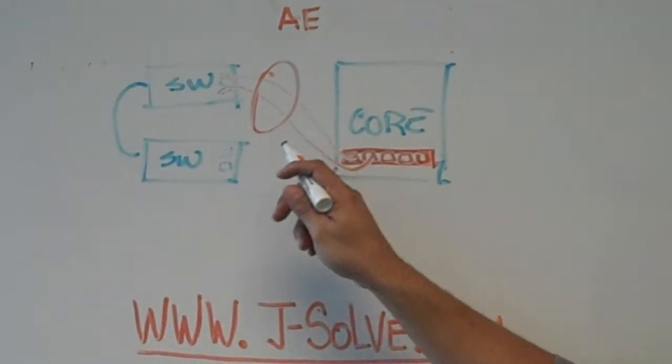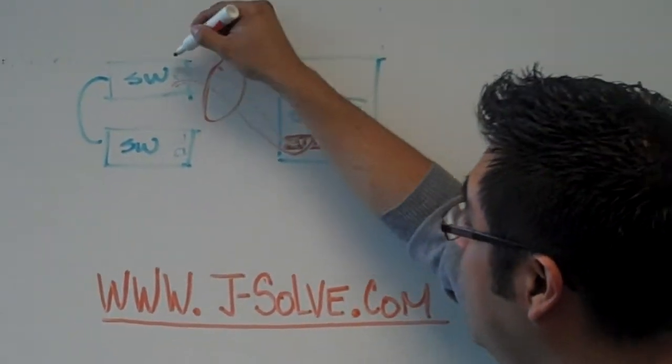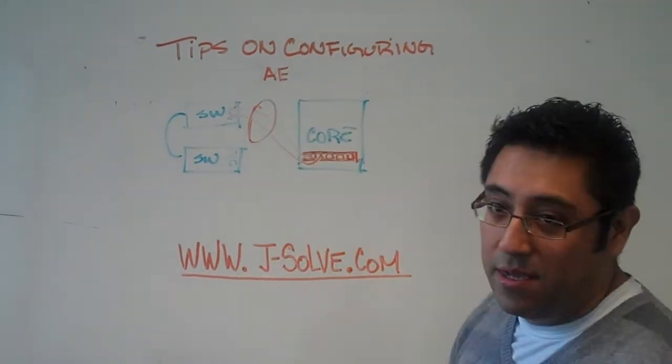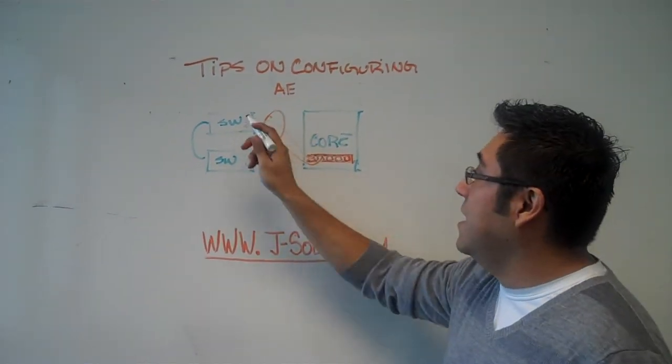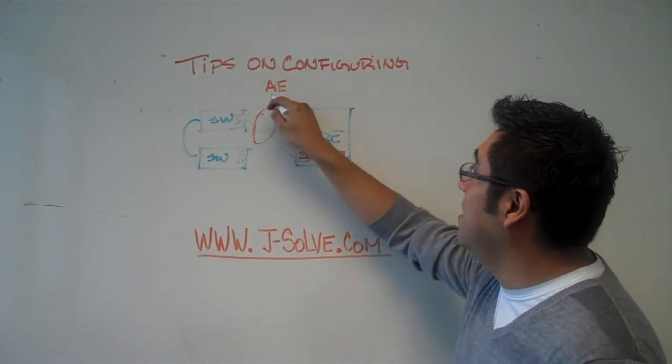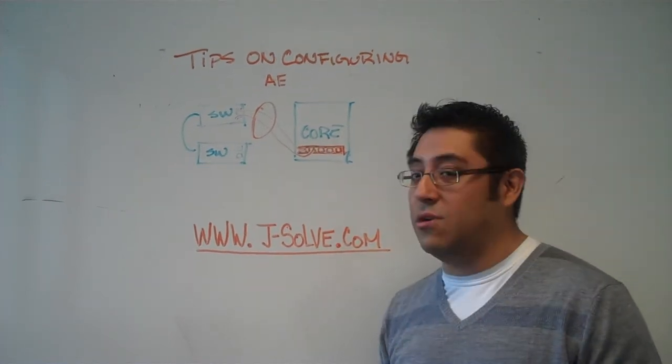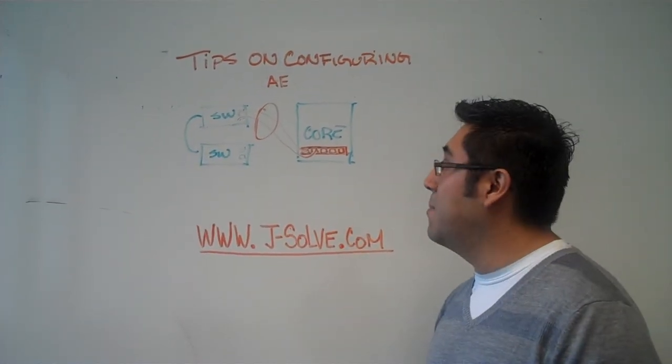When you are configuring this on a Juniper device, you have to disable the Ethernet options on the port. By doing so, you take it out of the Ethernet controller and you put it into an aggregated interface, thus allowing you to pass more traffic than you would normally be capable of.